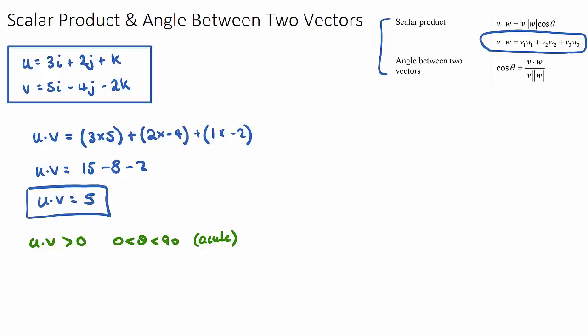So the actual size of the number isn't too important about whether it's acute or not, it just needs to be positive. Now, if the dot product came out to be a negative value, less than zero, the angle between the two vectors will be obtuse. So it'll be between 90 and 180 degrees.